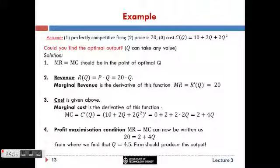Notice that 4.5 is not an integer, and when we deal with derivatives we allow q to be any number. As we extensively discussed in previous lectures, allowing the firm to produce any real number is a great simplifying assumption that lets us use derivatives for many different purposes. The same method applies for any other cost function or any other price, and will always yield an optimal number. This slide is the crucial slide from this lecture — you must be able to understand the logic and repeat it for some other cost function or price.